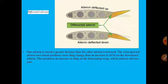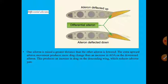There are other devices to mitigate adverse yaw. The first is differential ailerons. The idea is to increase drag on the down-going wing to equalize the differential drag. To do this, the up-going aileron is deflected to a larger value than the down-going aileron, creating more drag on that side and minimizing the differential drag that causes adverse yaw.